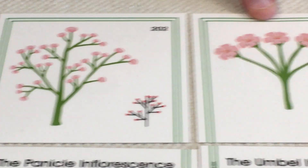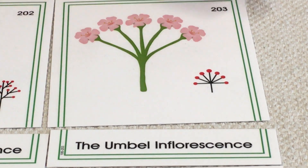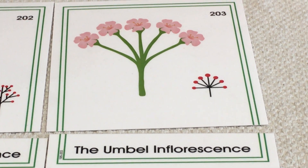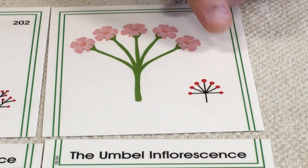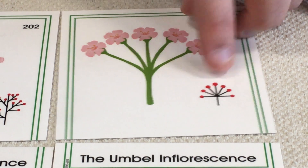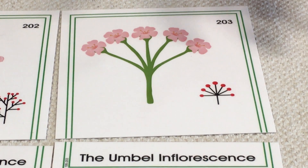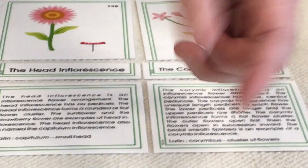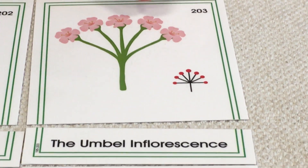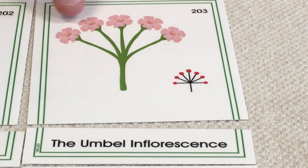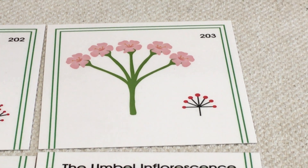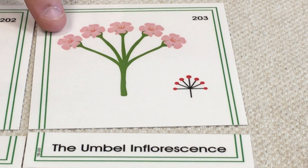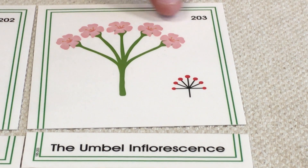And the last inflorescence is called the umbel inflorescence. This one is arranged almost like a fan shape, or like the fingers on your hand. One major peduncle, and many pedicels going off the side, arranged in a half circle or a fan shape. And of course, one bloom at the end of each.